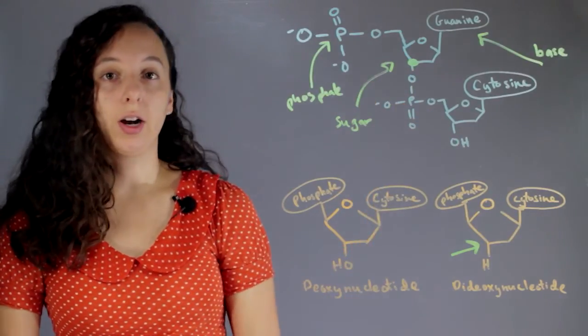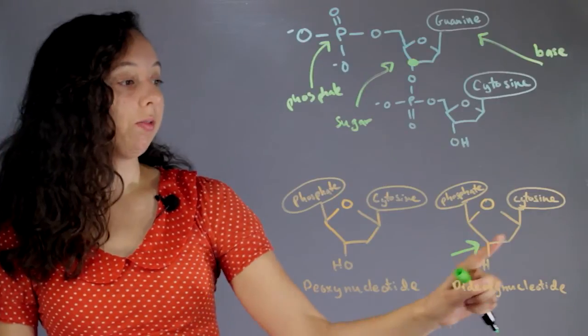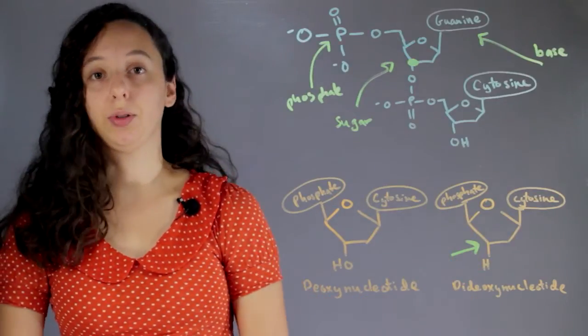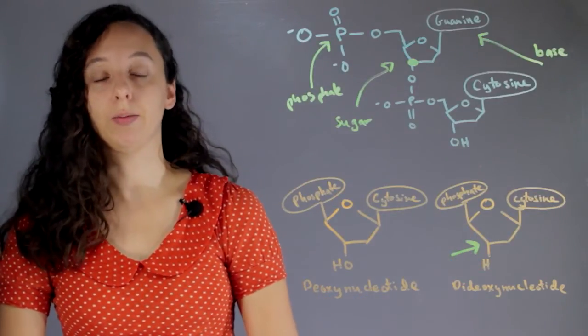This means it can never form this linkage with this phosphate, so it will never continue the chain. As soon as one of these gets in there, the DNA stops growing, breaks off, and forms a puzzle piece.